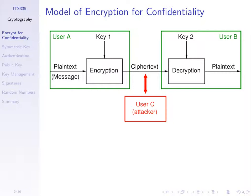A does not send the plaintext across the network — they send the ciphertext instead. User C, a malicious user, can observe and see the ciphertext. When user B receives the ciphertext, they apply the decryption function. To decrypt, they use a key and the ciphertext as inputs, and if everything works correctly, they get the original plaintext out. The sender encrypts the plaintext using a key, sends the ciphertext, and the receiver decrypts using a key to get the original plaintext.